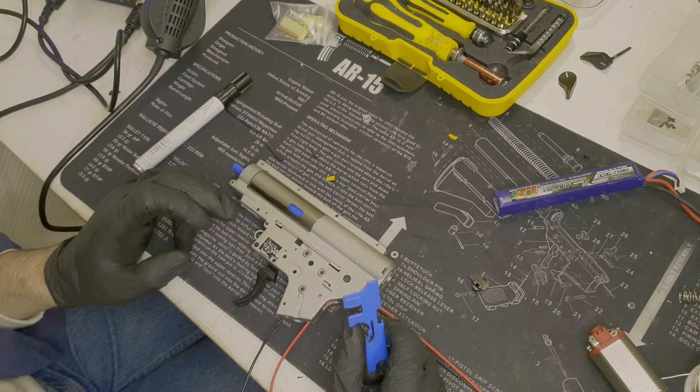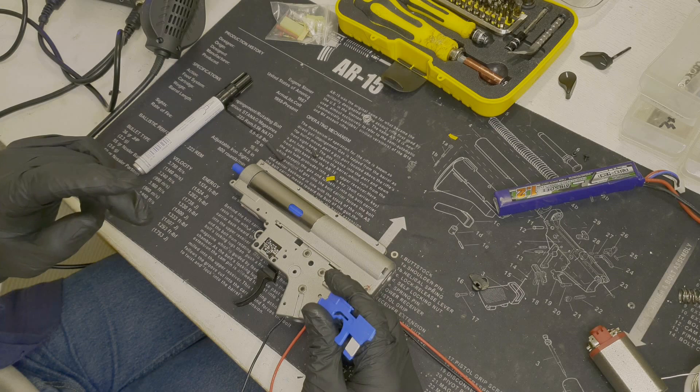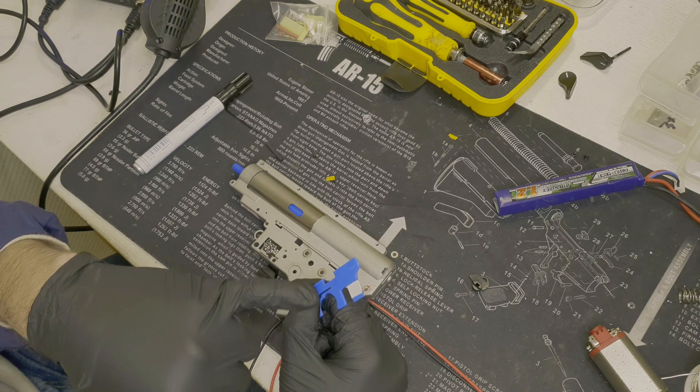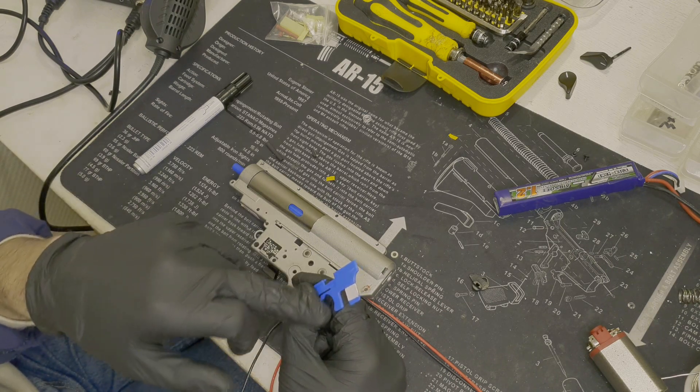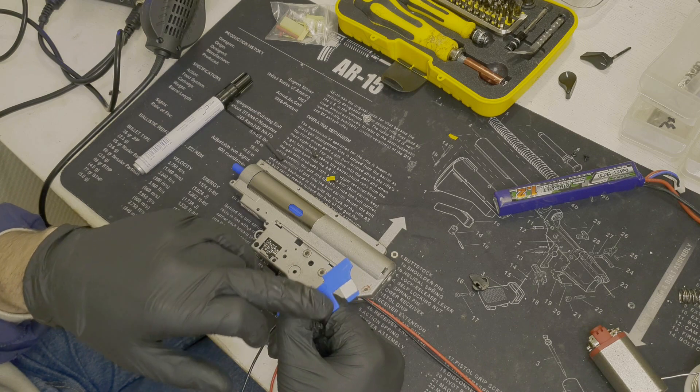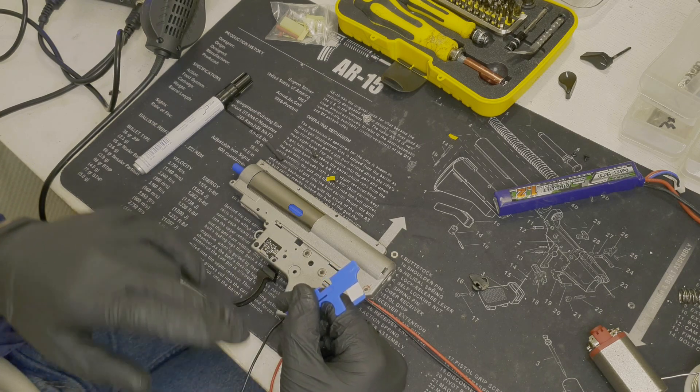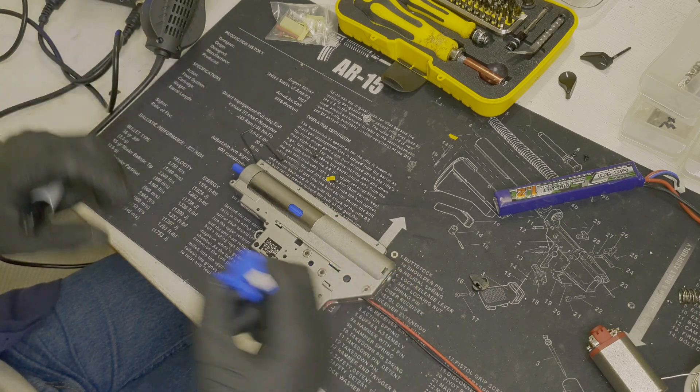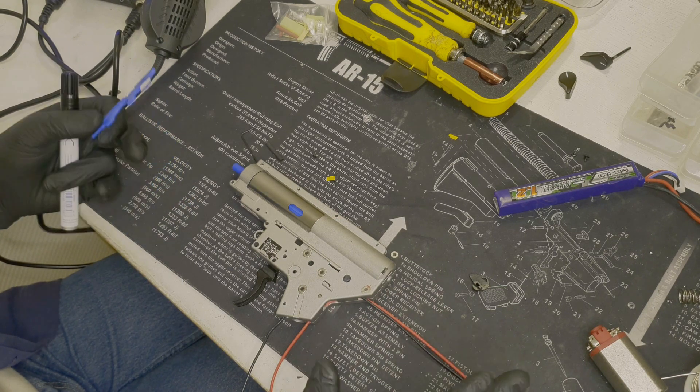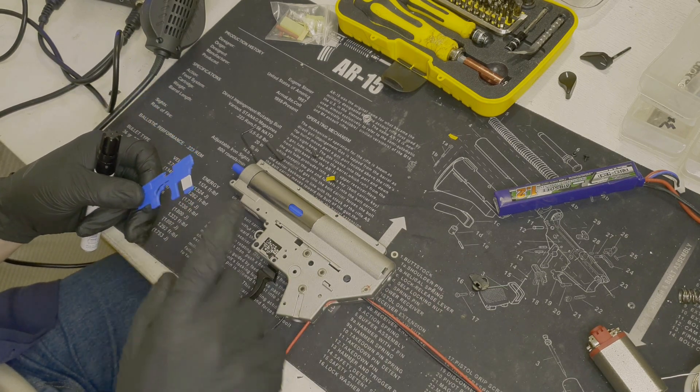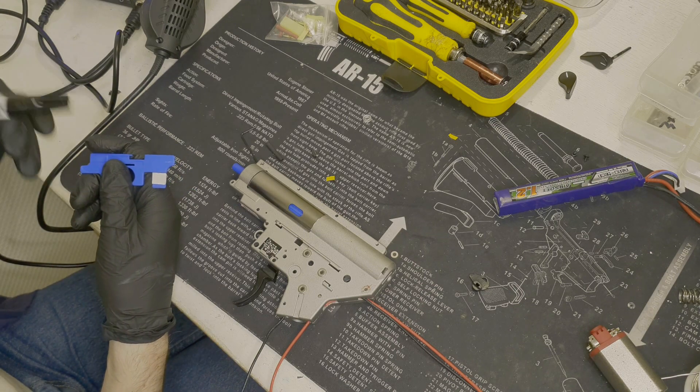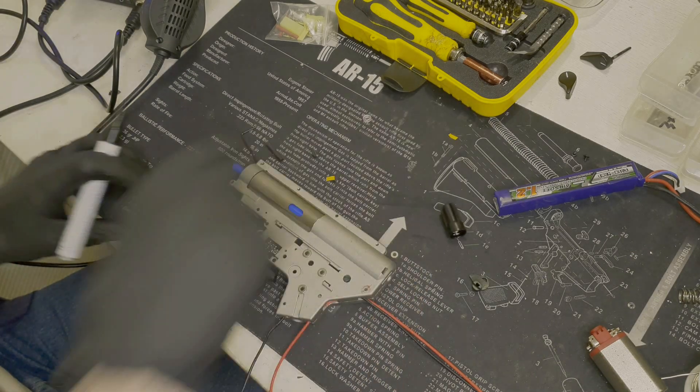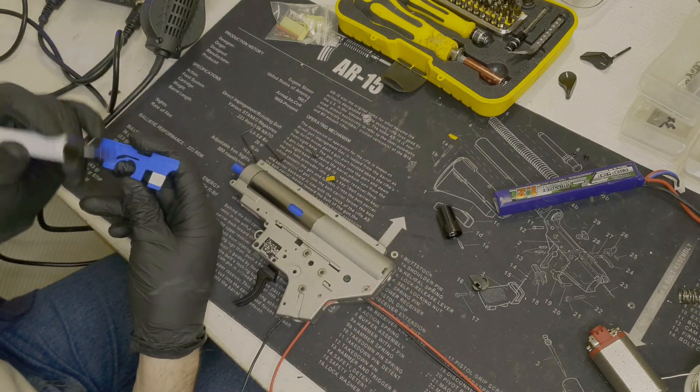Basically what happens is the sensor detects when the sticker is, or when it registers the sticker. So when it registers the white paper, or when it registers black or darkness. In order to adjust or kind of fool the sensor that it still hasn't hit the white paper, you're going to use a sharpie.